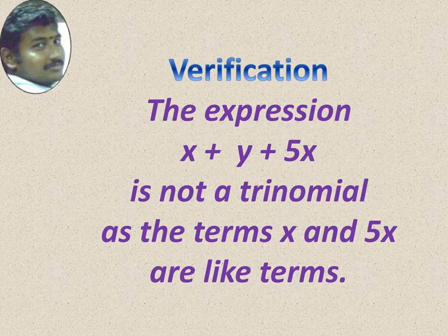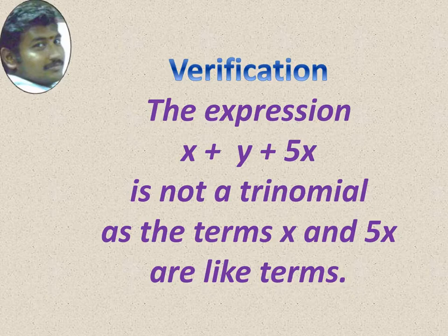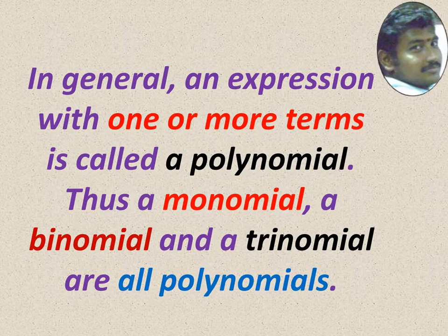For example, x plus y plus 7, ab plus a plus b, 3xy minus 5x plus 2, m plus n plus 10 — all are examples of trinomials. Let us verify: the expression x plus y plus 5x is not a trinomial because x and 5x are like terms. By seeing unlike terms is important. In general, an expression with one or more terms is called a polynomial. Thus, a monomial, a binomial, and a trinomial are all polynomials.